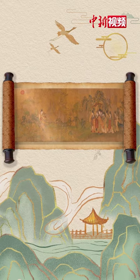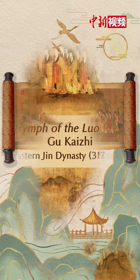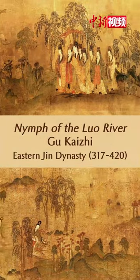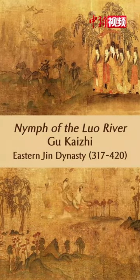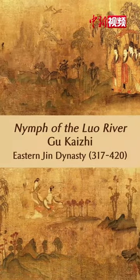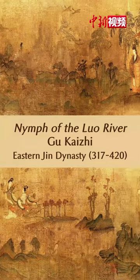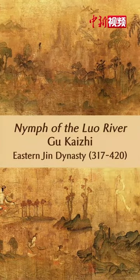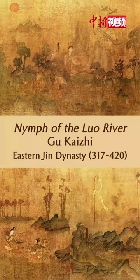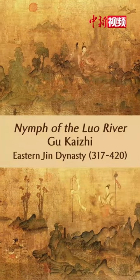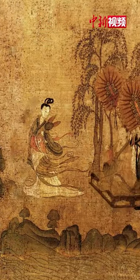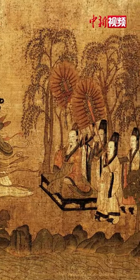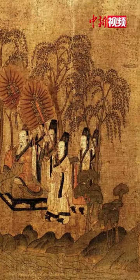In The Nymph of the Luo River by Gu Kaizhi, the graceful river nymph descends on the gentle water waves, ribbons from her robes blowing in the wind. Her eyes are filled with attachment and affection for her lover.